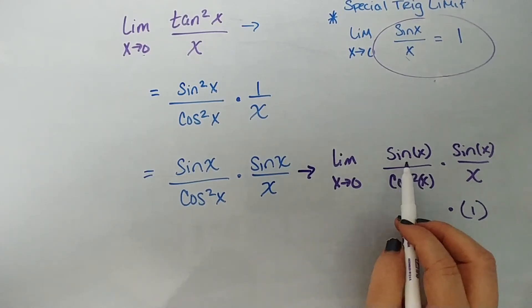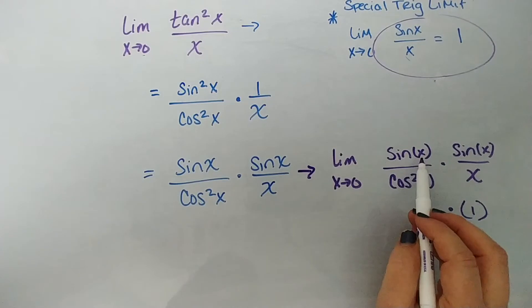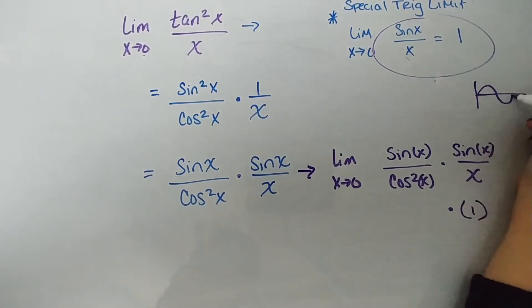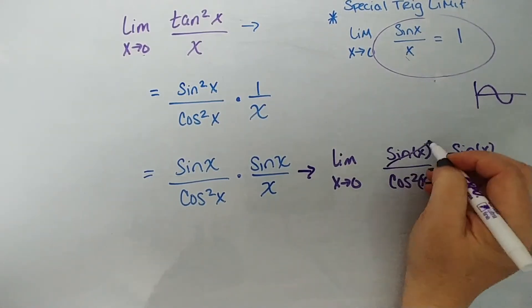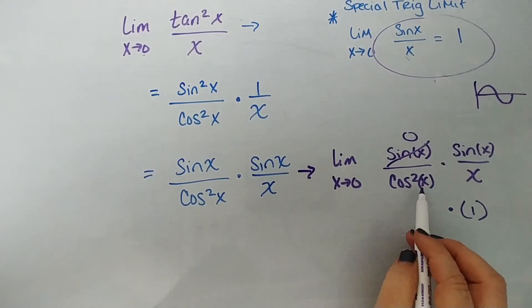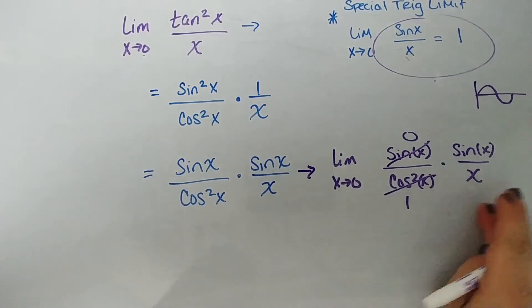So now we know we can put direct substitution in. So the sine of 0, remember our graph for sine, sine of 0 starts at 0. So that's going to give me a 0 up there. Cosine squared of x, so cosine of x, if x is 0 is 1 and 1 squared is simply still 1. So let's get rid of this. We have 0 over 1, which is 0, okay?